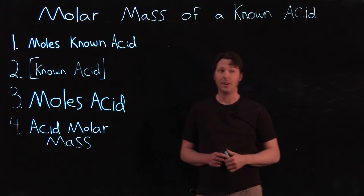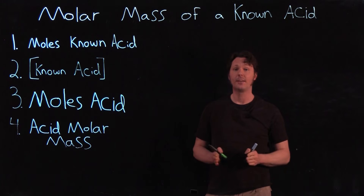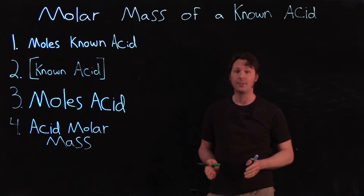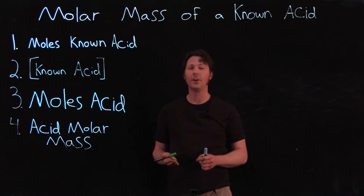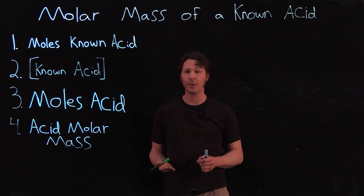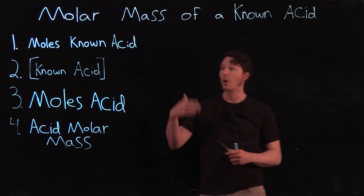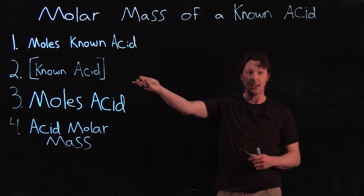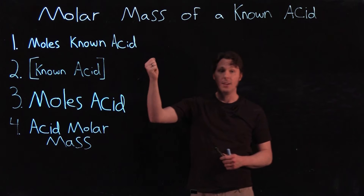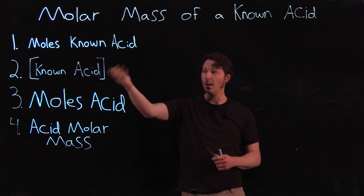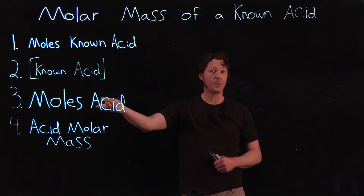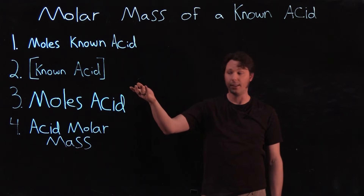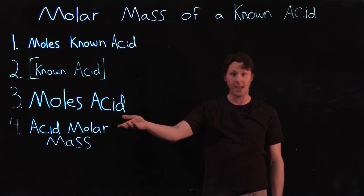Post lab question three asks you to perform the calculations needed to determine the molar mass of your known acid. Our approach will be nearly the reverse of the series of calculations used to determine the sodium hydroxide concentration. We're going to determine the moles of known acid that were titrated, use that to calculate the concentration of the known acid solution, calculate the total moles in that solution, and finally determine the known acid's molar mass.